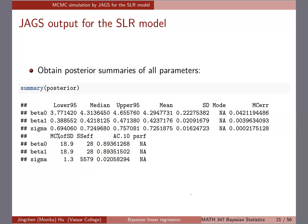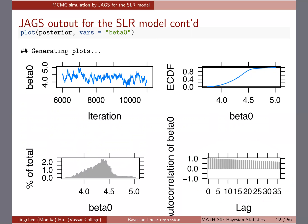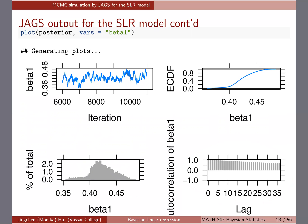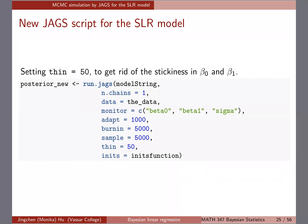That high autocorrelation shows up in the MCMC diagnostic plots. For beta_0, the trace plot is very sticky — we want to see it moving up and down much more often. Even after lag 35, the autocorrelation is still high, which tells us how large our thinning should be. Beta_1 is similarly sticky in the trace plot and also shows very high autocorrelation. For sigma, things look fine overall.